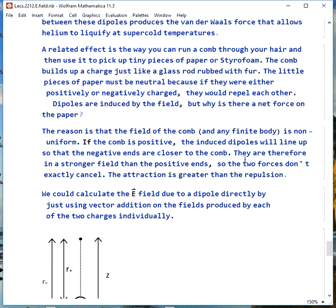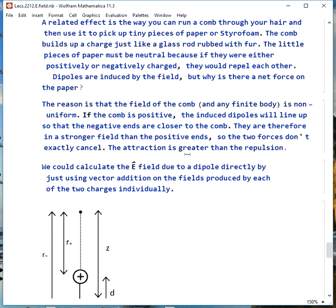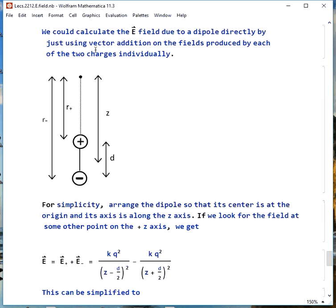The reason is the field of the comb in any finite body is non-uniform, so we don't have cancellation. If the comb is positive, the induced dipoles line up so the negative ends are closer to the comb, but they're in a stronger field than the positive ends, so the two forces don't exactly cancel. The attraction is greater than the repulsion.